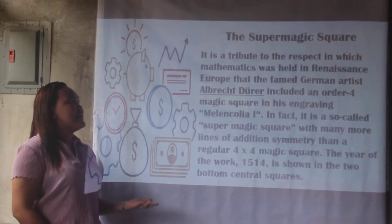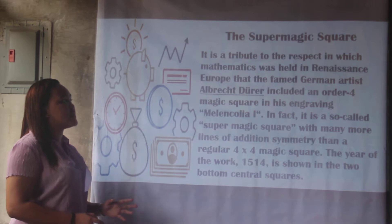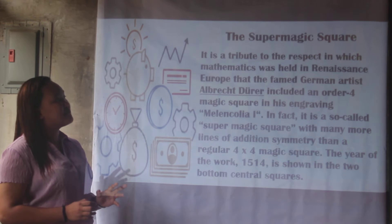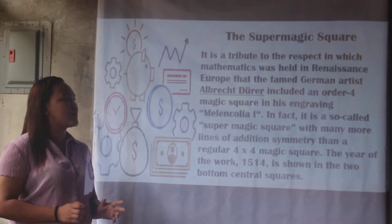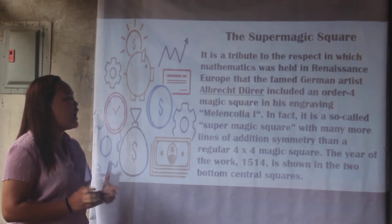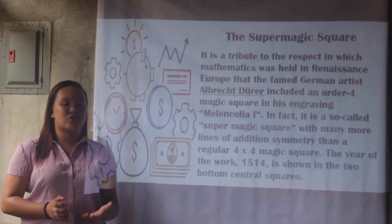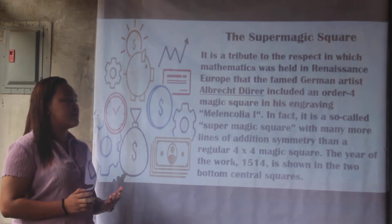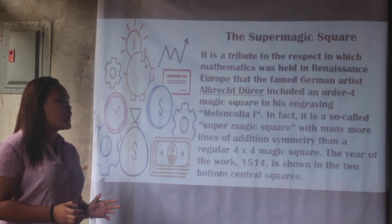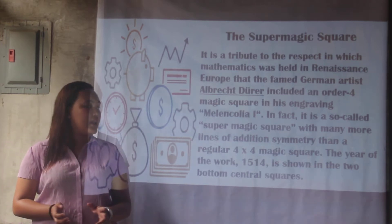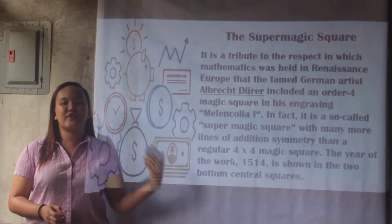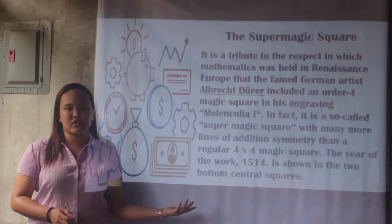The supermagic square: it is a tribute to the respect in which mathematics was held in Renaissance Europe that German artist Albrecht Dürer included an ordered 4x4 magic square in his engraving Melancholia I. It is a so-called supermagic square with many more lines of addition symmetry than a regular 4x4 magic square. The year of the work, 1514, is shown in the two bottom central squares.